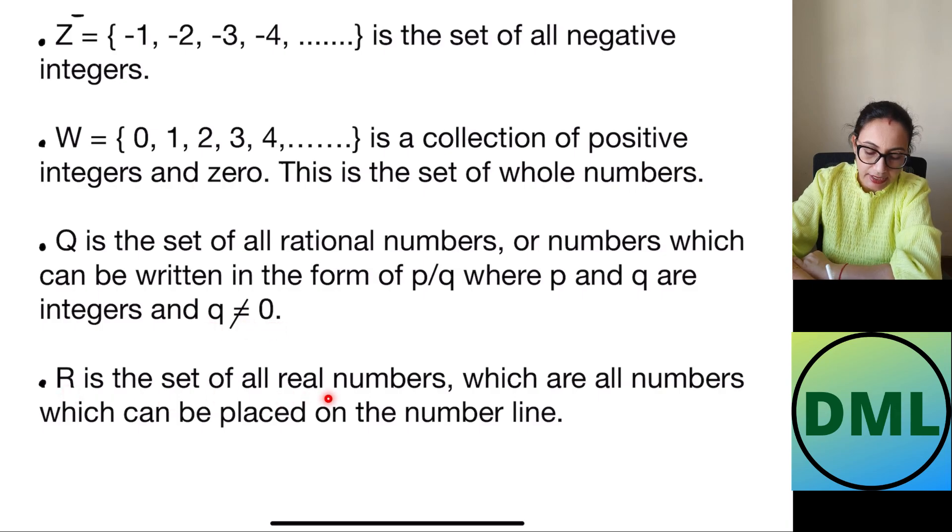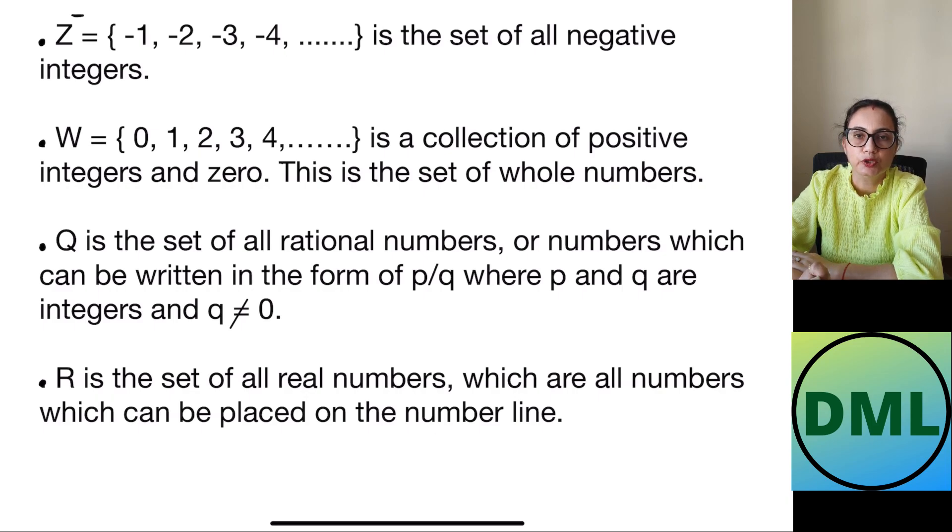Next is R. R is the set of real numbers which means that all the numbers can be placed on the number line. Number line you can place 2.3, 2.4, 1.5, 0.2 any numbers you can placed on the number line. All these numbers will come as the real numbers.